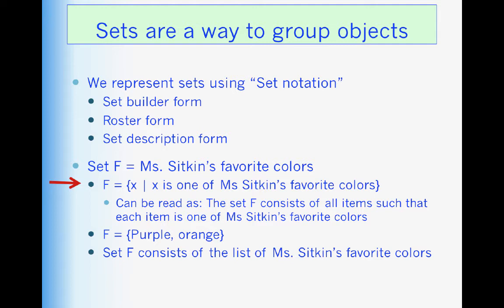We always use those curly braces when we put things in sets. That's our container. So we can read that as the set F consists of all items such that each item is one of Ms. Sitkin's favorite colors. That vertical bar is such that.